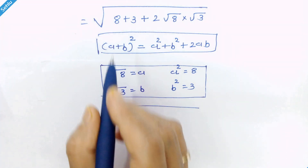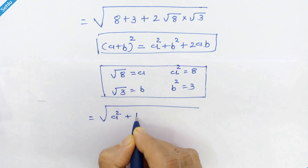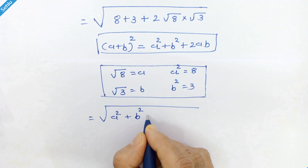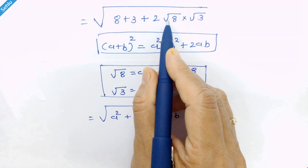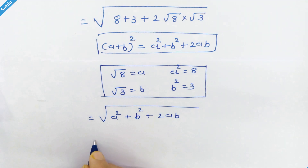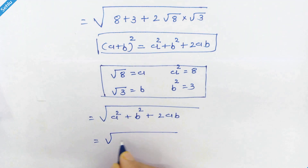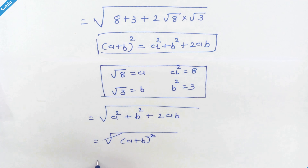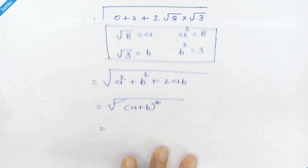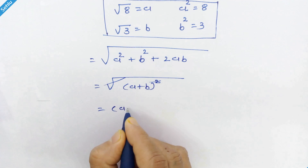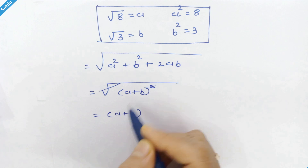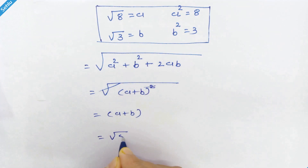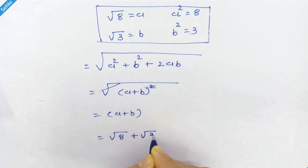We place a squared in place of 8, b squared in place of 3, and 2ab in place of 2 times square root of 8 times square root of 3. This equals a plus b whole squared, and the square and square root cancel out, so we have a plus b. Now let's put the original values back: square root of 8 plus square root of 3.